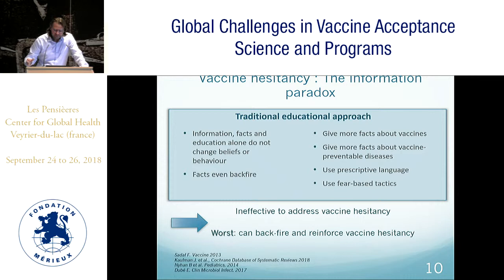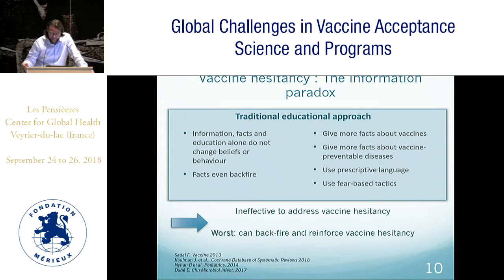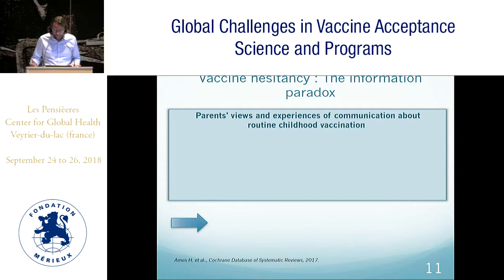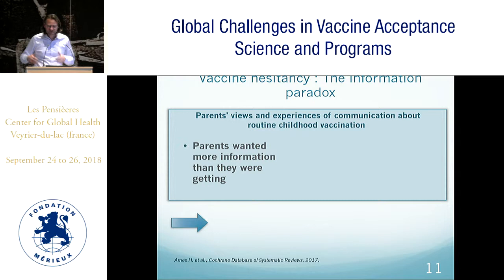In vaccine hesitancy there is an information paradox. Traditional educational approaches are ineffective at addressing vaccine hesitancy — we know that information, facts, and education often do not change beliefs or behavior, and facts can even backfire. Giving more facts about vaccines using prescriptive language or fear-based tactics can reinforce vaccine hesitancy. Yet when we ask parents about their communication experience regarding routine childhood vaccination, they consistently say they wanted more information. So traditional educational methods fail — what is the problem?